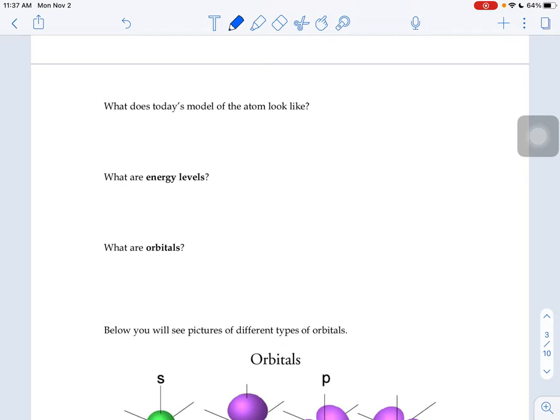Our best guess of what an atom looks like today is that we have the nucleus in the center, which is made up of protons and neutrons. And then the electrons don't move around the nucleus like planets around the sun in rings. Instead, the electrons are in what we call electron clouds.